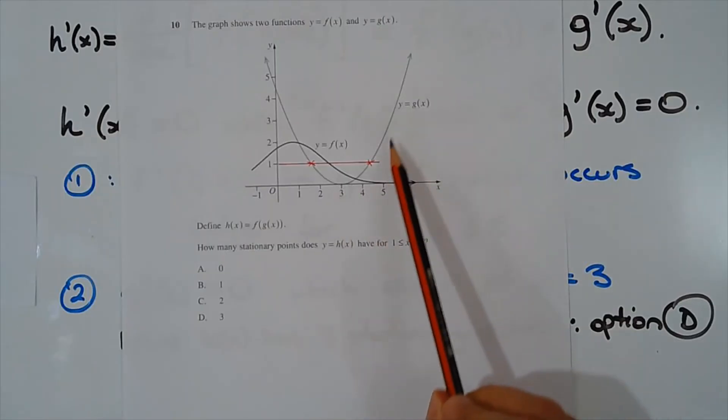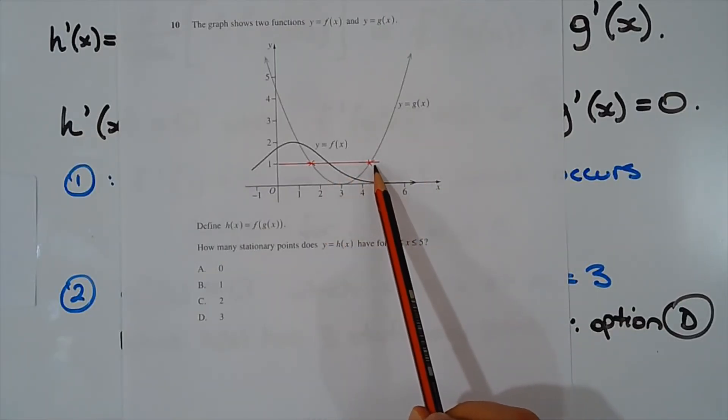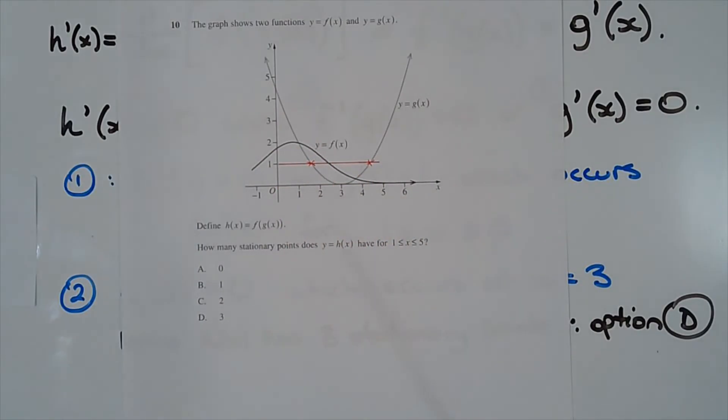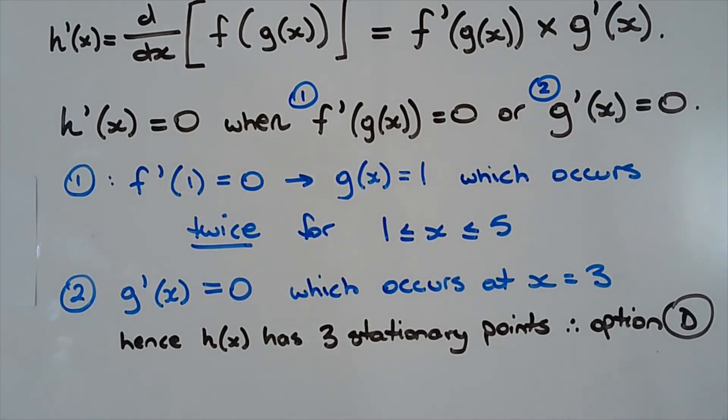So g of x equals 1 here and here. And it's f dash of 1 where the stationary point occurs on the curve y equals f of x. So two stationary points occur there.